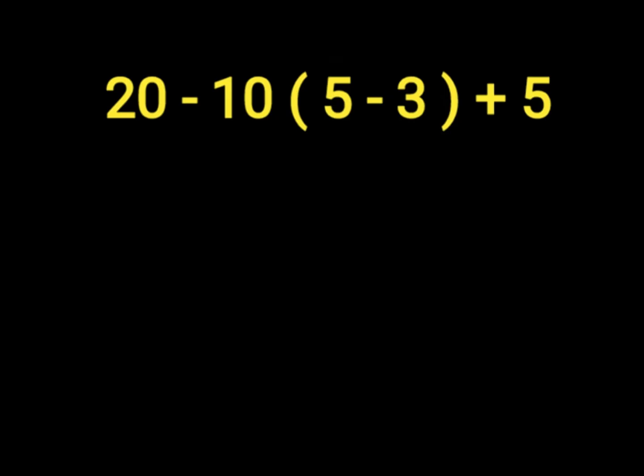First of all, parenthesis which is 5 minus 3. 5 minus 3 will give us 2. So we'll put down our 20 minus 10 times 2 plus 5.